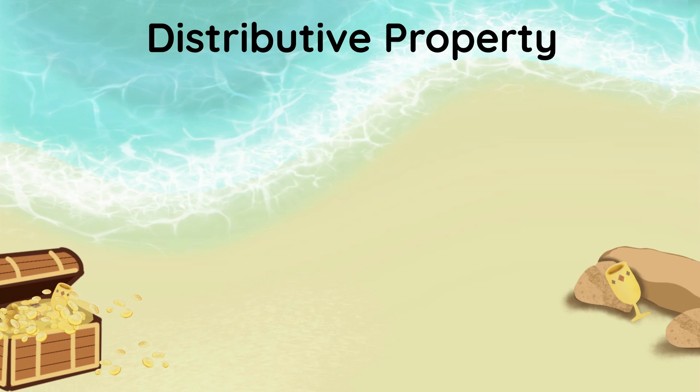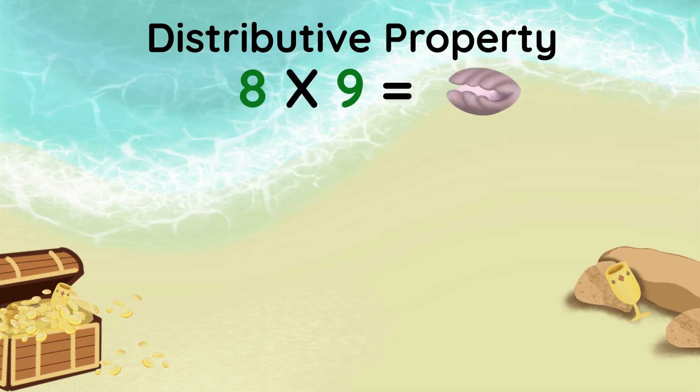When multiplying, we often skip count to solve. However, when working with larger factors, such as 8 times 9, using the distributive property comes in handy. I am going to start with an 8 by 9 array.